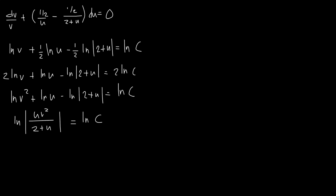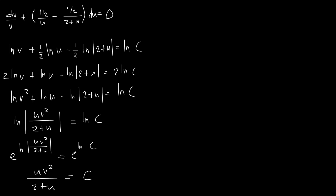Taking the exponential of both sides: e^(ln(uv²/(2+u))) = e^(ln C), which simplifies to uv²/(2 + u) = C, or equivalently uv² = C(2 + u).